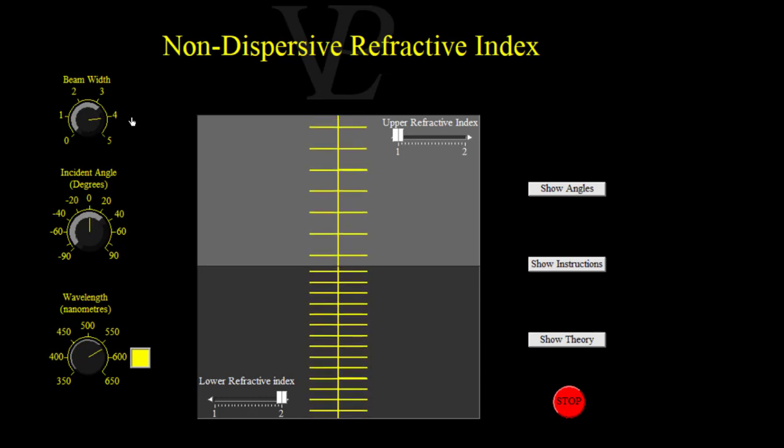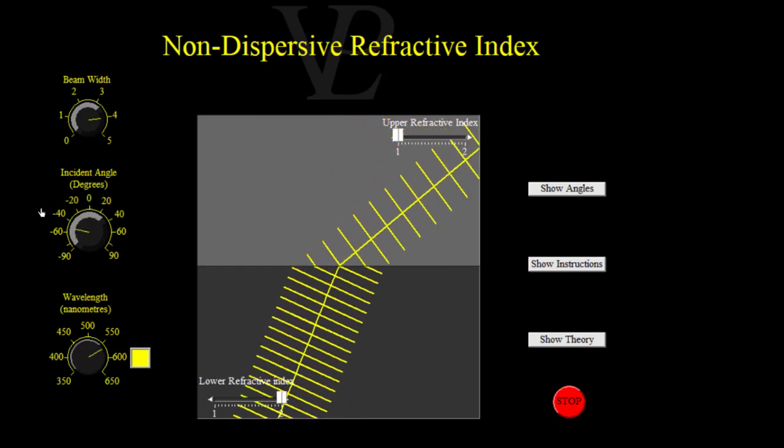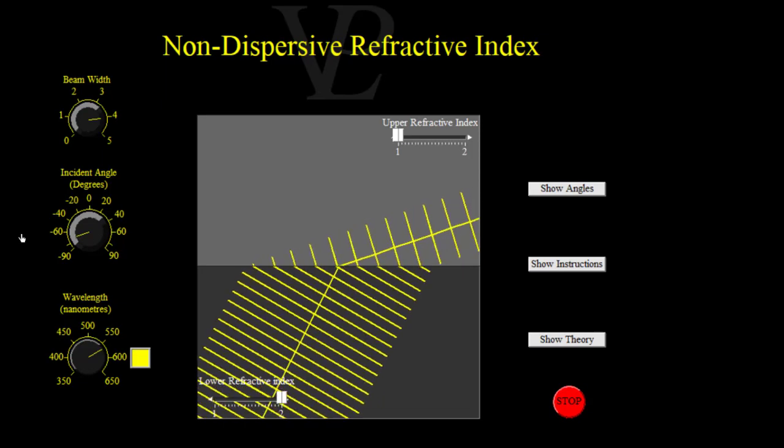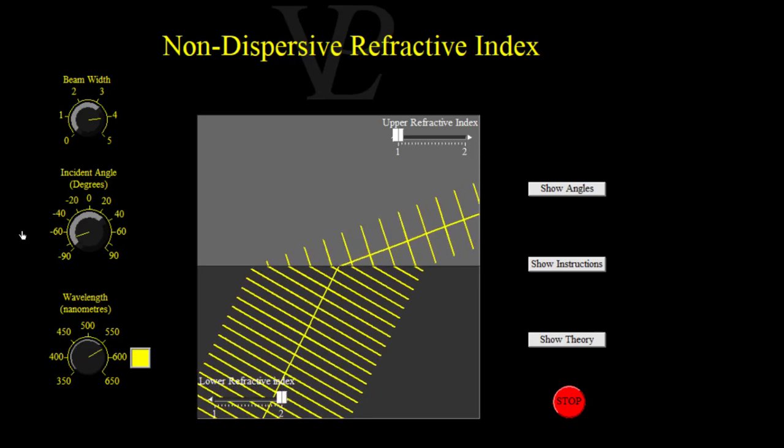We can observe the refraction of the light by changing the angle that the light enters the glass. As the light slows down, in order for the wavefronts to become closer together, the light is forced to change direction or refract.